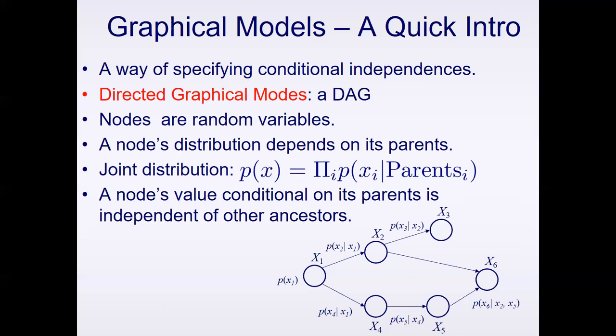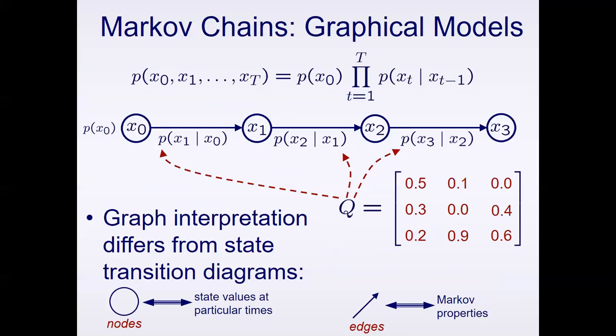We can calculate joint distributions by aggregating probabilities across these edges. Our joint distribution P(X) is simply the product of all P's given their parents. Given the Markovian assumption, each probability only depends on each node's parents — the neighboring nodes. Given a chain, which is our temporal process, we can further simplify this graphical model from a directed acyclic graph (DAG) down to a simple chain, going from one time index to the next, where each step represents a state transition.